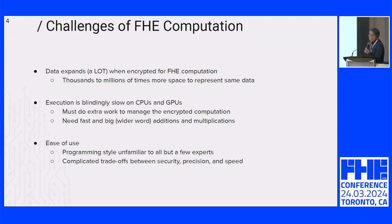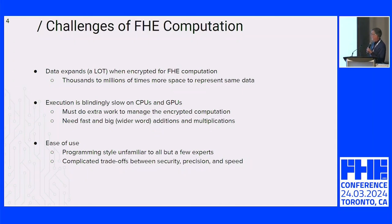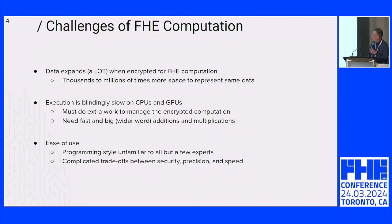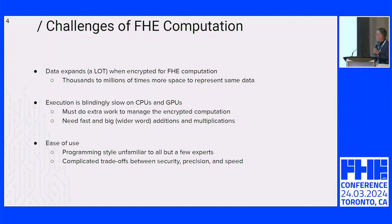A second problem is execution — blindingly slow on CPUs and GPUs. We have to do extra work to manage encrypted computation, and we need fast and big additions and multiplications to actually do the computation itself. Whether it's bootstrapping or the actual computation, it's all too slow. We need to accelerate by probably a factor of 10^4 or 10^5 to be practical.